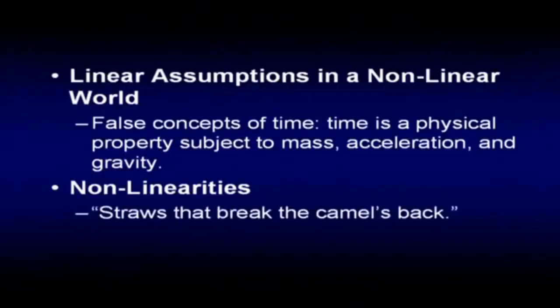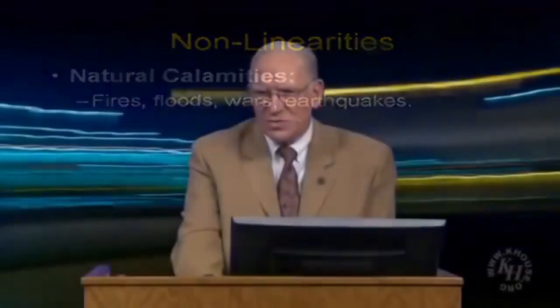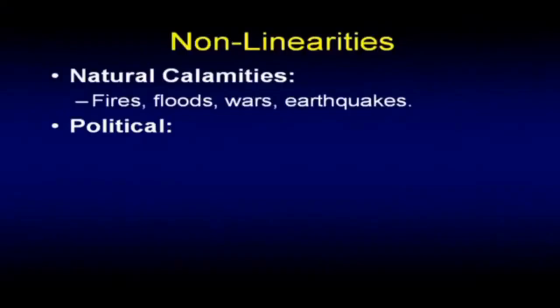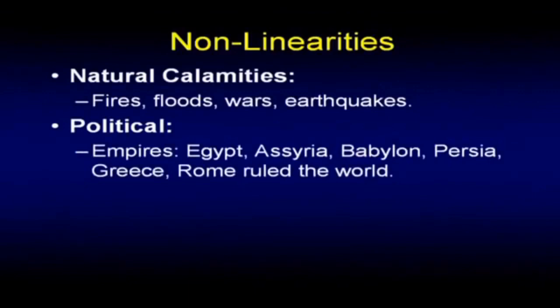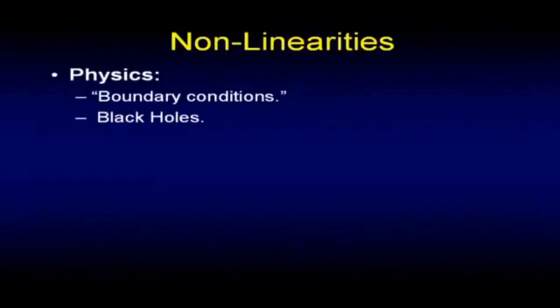Non-linearities come in many forms. Natural calamities — fires, floods, wars, earthquakes — intrude in our lives at really unpredictable occasions. We have political non-linearities: empires fall and rise. If increased taxation and lavish spending could save an economy, Rome would still rule the world. Empires rise and they fall — the average lifespan of an empire is about 200 years. Physics has non-linearities called boundary conditions — conditions that are true up until a certain point. There are black holes. In quantum mechanics, length, mass, energy, and time are quantized.